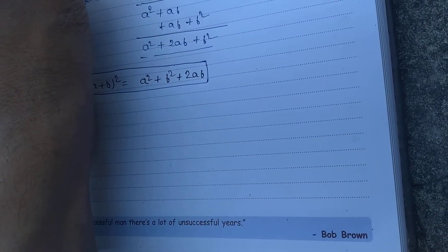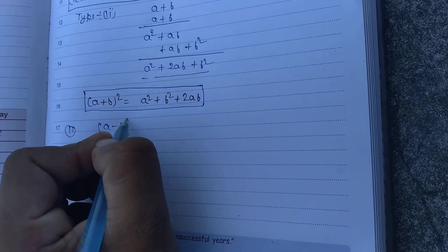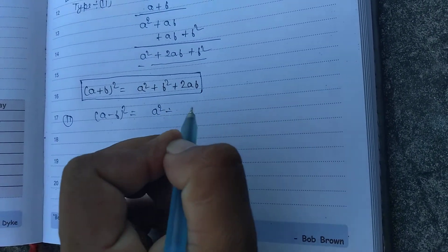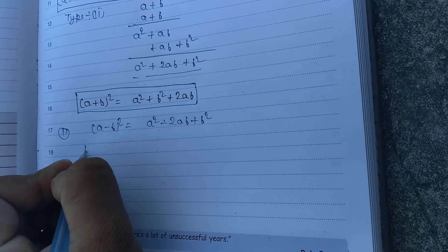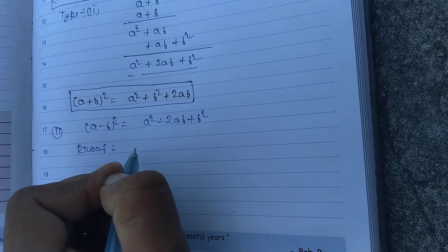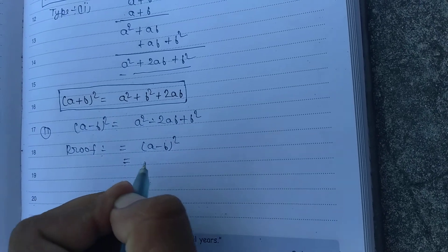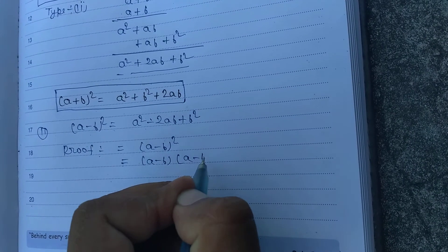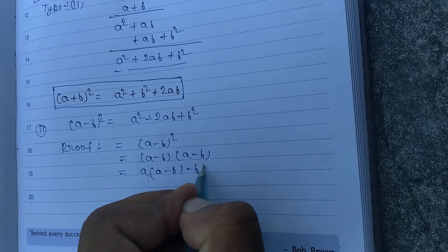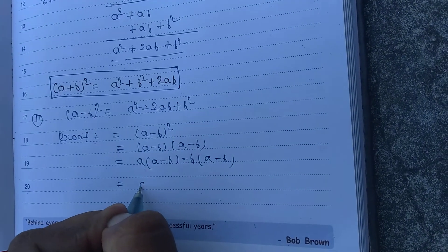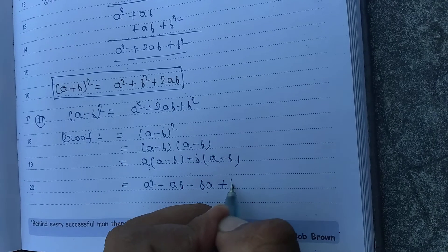Second formula: A minus B whole square equal to A square minus 2 A B plus B square. Proof: A minus B whole square can be written as A minus B into A minus B. A multiplied gives A square minus A B, minus B A, minus minus becomes plus, so plus B square.